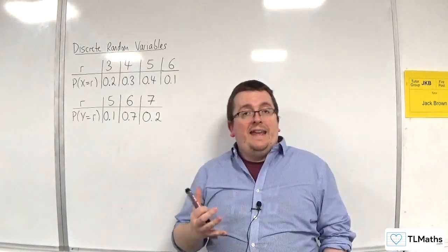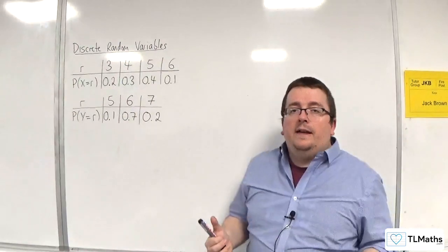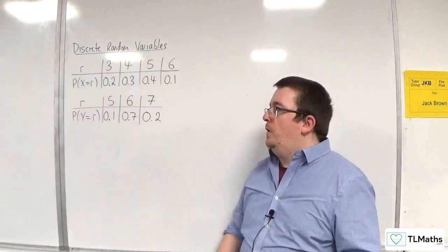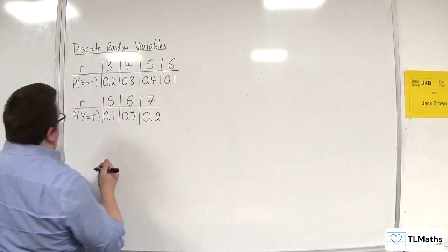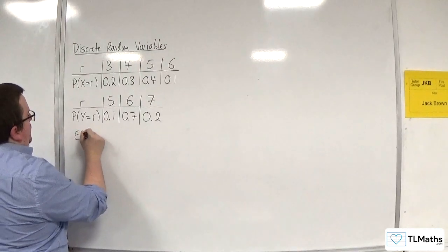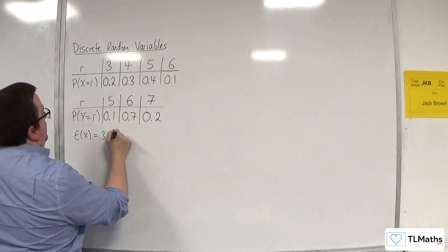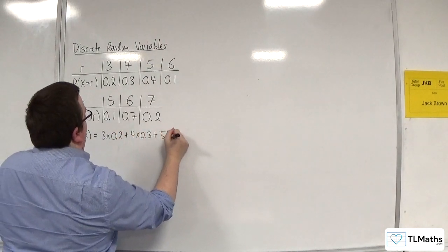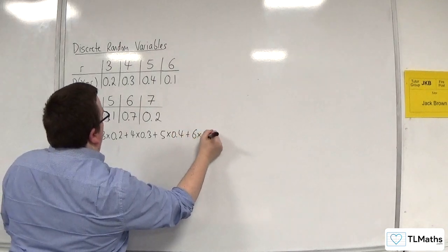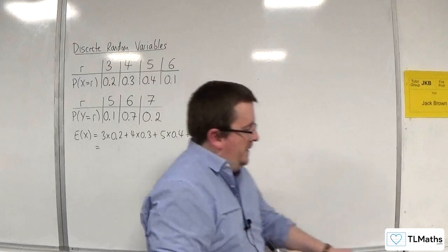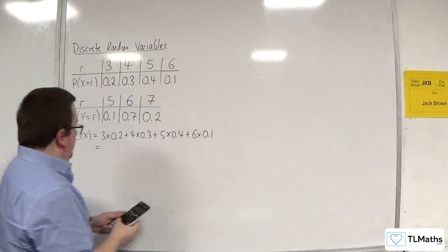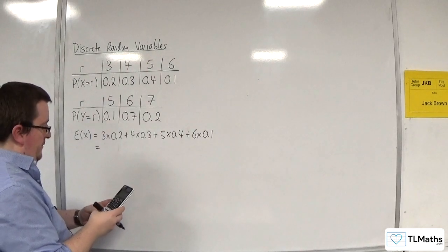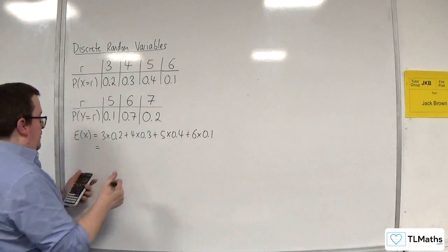Now I'm going to need to find E(x), Var(x), E(y), and Var(y). So let's start with E(x): that's 3 lots of 0.2, plus 4 lots of 0.3, plus 5 lots of 0.4, plus 6 lots of 0.1, and that gets me 4.4.